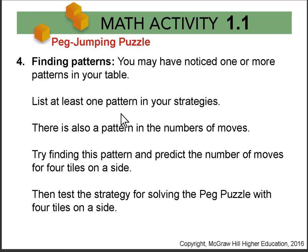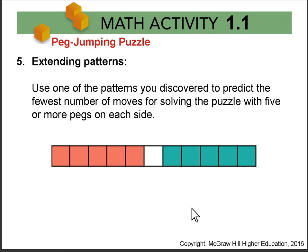List some patterns, think about the number of moves, and try to predict the number of moves you would need for four tiles on each side. Using the pattern, it's pretty straightforward to move four tiles from one side to the other. Then finally, extend your pattern and see how many moves there are for five pegs or tiles on each side. I hope you have fun with the peg jumping puzzle.